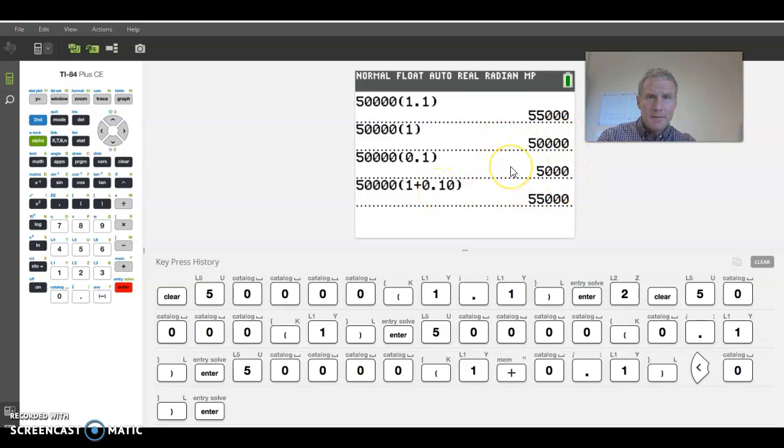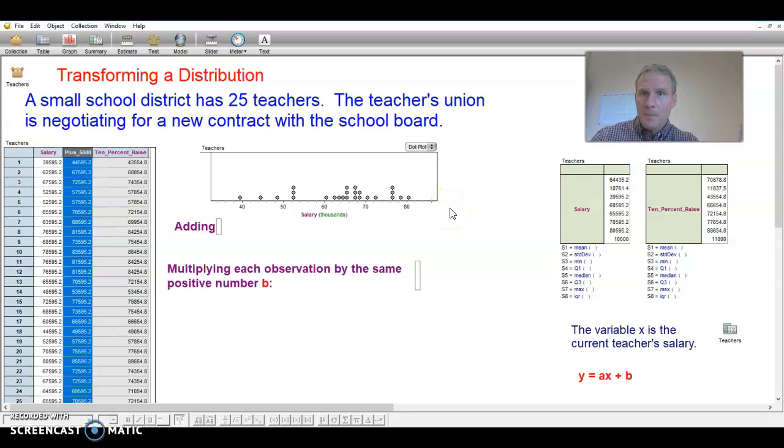So that teacher making 50,000 would get a $5,000 raise. Would make no difference to them which method, the adding method we talked about or the multiplying because they're going to make 5,000. But if you were only making 40,000 a year, then you would only get a $4,000 raise. On the other hand, if you were making 80,000 a year, you would get an $8,000 raise. So now not everybody gets the same raise. Teachers on the upper end of the salary chart would prefer to get the 10% raise instead of the $5,000 straight across the board raise.